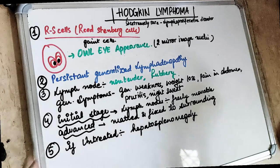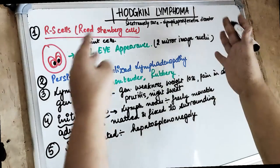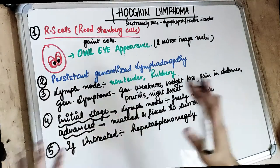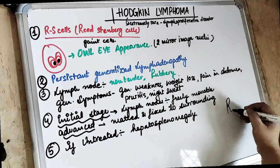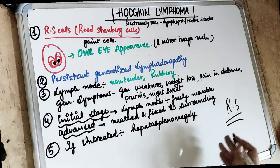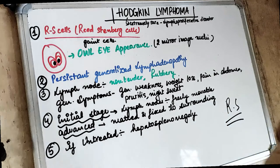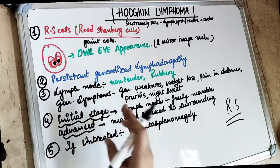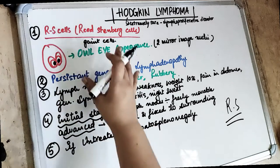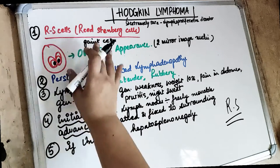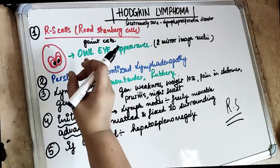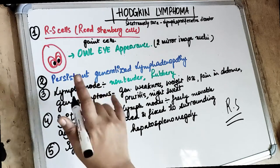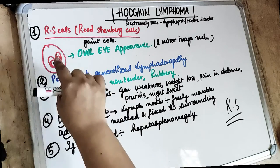So always remember, if we are talking about Hodgkin lymphoma, always remember RS cells — not Ranjit Singh, but the Reed-Sternberg cells. Reed-Sternberg cells are the giant cells and if you look at them, they have a specific typical appearance of owl's eyes.